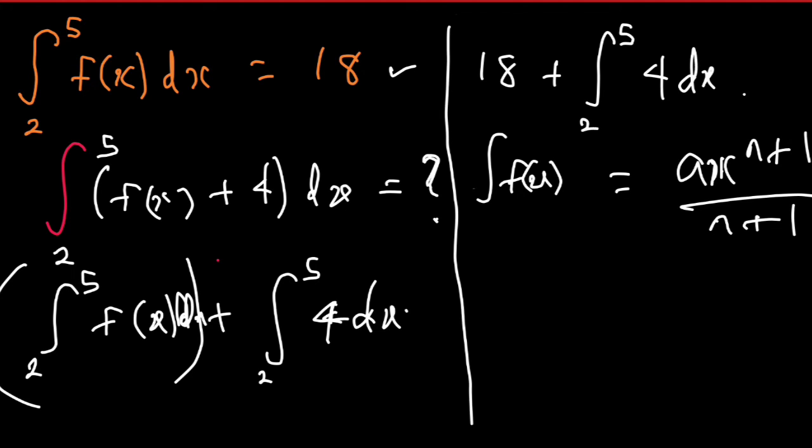If I write the function then I can easily write this as 18 plus integral from 2 to 5 of 4x^0 dx. I'm going to put x here but x that we put will be having zero as the power.